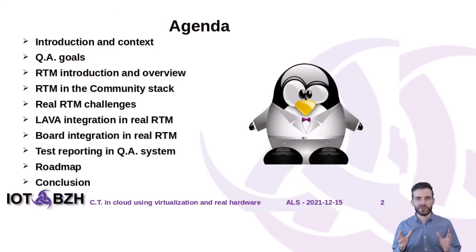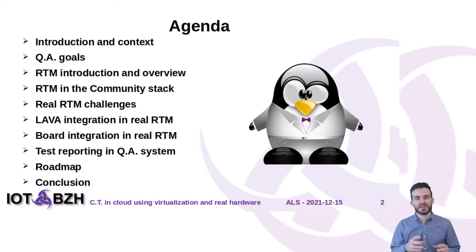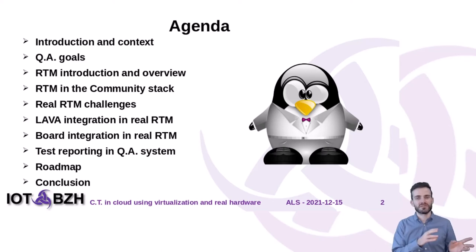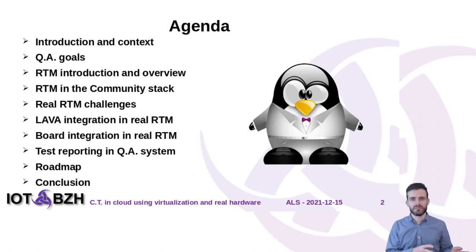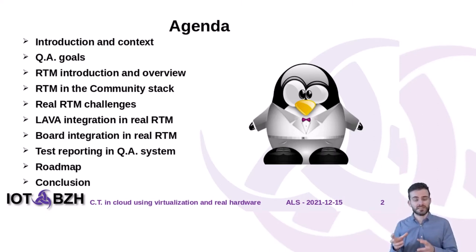Our agenda will be the following. I will start with a first introduction about QA and our QA goals. Then we will see the concept of RTM and how they are already implemented inside the community stack. After that, we will talk about real RTM implementation and all the challenges behind it. Finally, we will talk about test reporting and finish with our roadmap and a short conclusion.